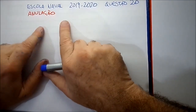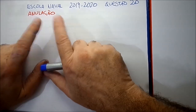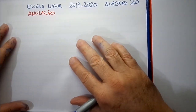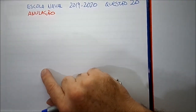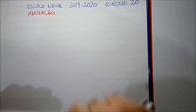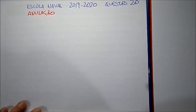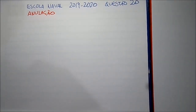Questão 20 precisa ser anulada por falta de resposta correta entre as opções. Eu já coloquei aqui no início do vídeo o recurso para vocês copiarem e eu vou fazer a resolução aqui no vídeo.